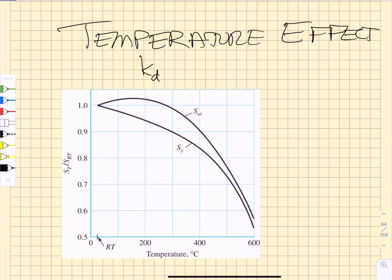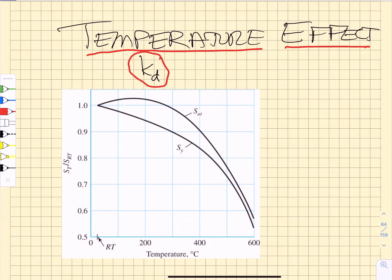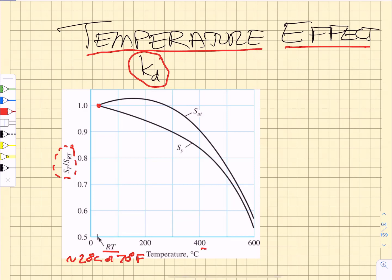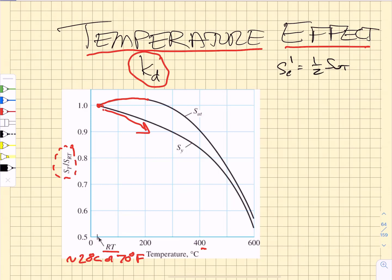These Marin factors are converting the ideal test conditions into actual service conditions. It turns out there will be a temperature effect also on the endurance strength, and so we are going to modify the endurance strength using a temperature correction factor, KD. The way we understand this is that if we take the ultimate tensile strength and divide it by the ultimate tensile strength at room temperature — where room temperature is about 20 degrees C or 70 degrees F — then as we increase the temperature, the ultimate tensile strength ratio goes up and then it comes down as temperature gets really large. The yield strength is constantly going down. And you may also recall that we estimate SE prime as one half the ultimate tensile strength.